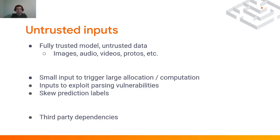Now let's consider that we trust the model completely — it was produced in-house, never altered. However, even in this scenario, the data can be untrusted. Most models operate on images, video, and so on. Each of these can be maliciously modified to exploit flaws in parsing, trigger large allocations or large computation, or even be altered to skew the prediction labels — this is the scenario of adversarial learning. Also, TensorFlow has over 100 third-party dependencies, so we need to be careful about vulnerabilities in those dependencies.